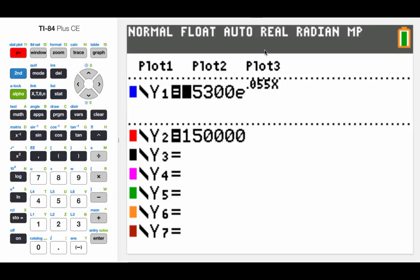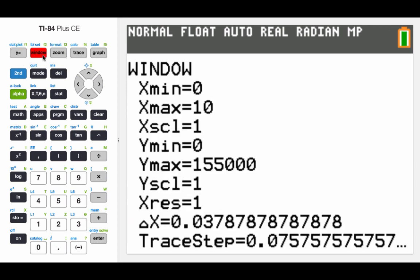To check our answer graphically, I've got that original population model typed into my graphing calculator. I'm using an x variable instead of a t variable just because that's what we're used to dealing with on our graphing calculators. I also came up with another equation. We're trying to figure out where this is equal to 150,000. So I'm just going to put a flat horizontal line in my graph at 150,000. Before we graph this out, we're going to have to change our window a little bit.